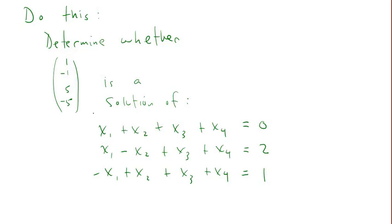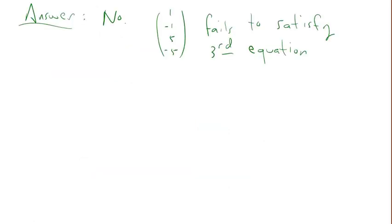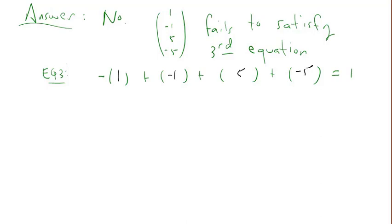Try this one on your own. Determine whether the vector (1, negative 1, 5, negative 5) is a solution of this system. Put the video on pause. The solution is no — this vector fails to satisfy the third equation. When you plug it into the third equation, you end up with a false equation.